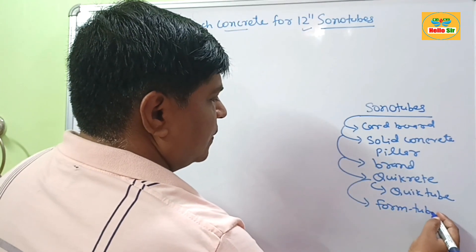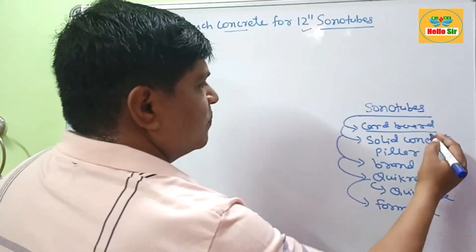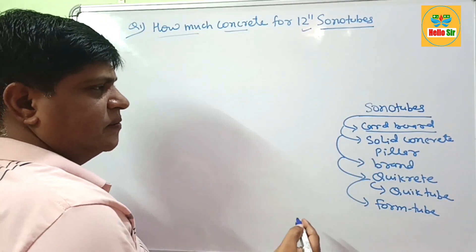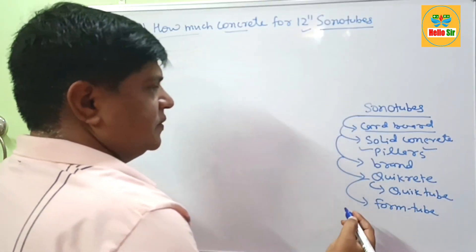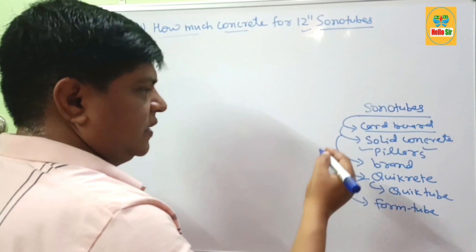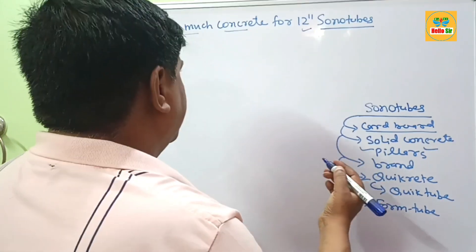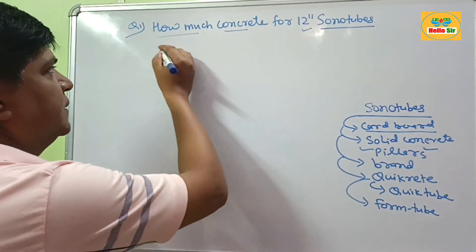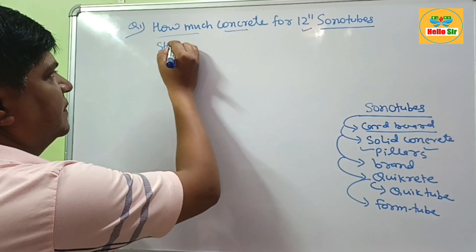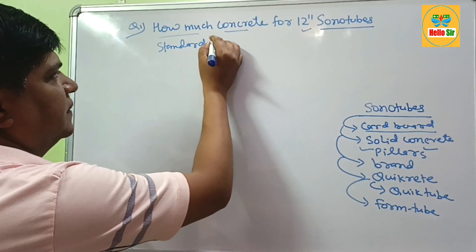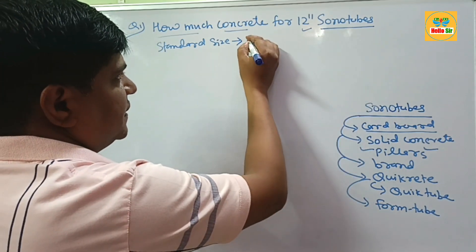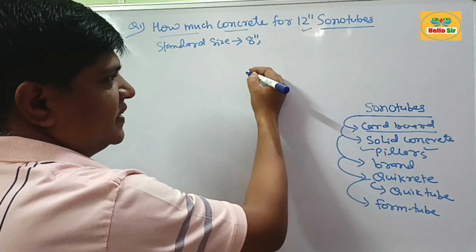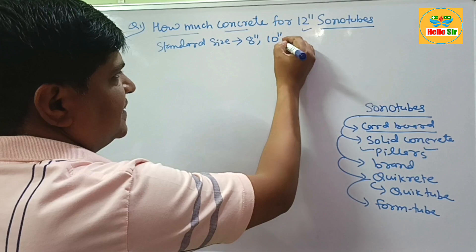All these are made from cardboard material and are biodegradable, used for casting pillars, columns, or foundations below or above the ground. The standard sizes of sonotubes are 8 inches in diameter, 10 inches in diameter,